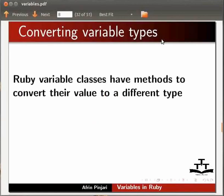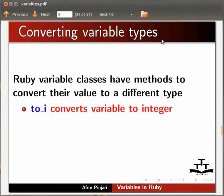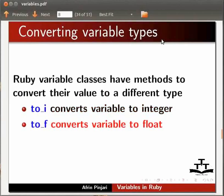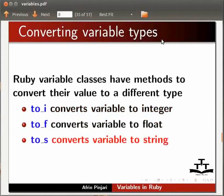Ruby variable classes have methods to convert their value to different type. to_i method is used to convert a variable to integer. to_f method is used to convert a variable to floating point value. to_s method is used to convert a variable to string. to_s method takes number base as an argument. The conversion depends on this number base.